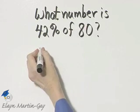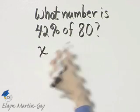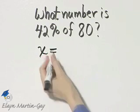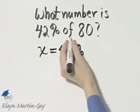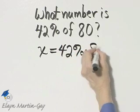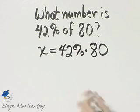What number—we'll let that be our unknown x—is means equals, 42% of means multiplication here, 80. And there is our equation.